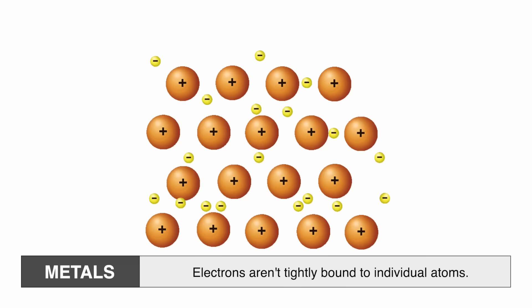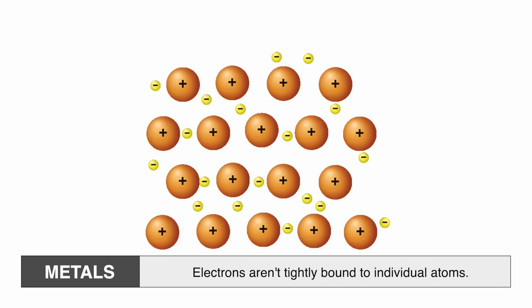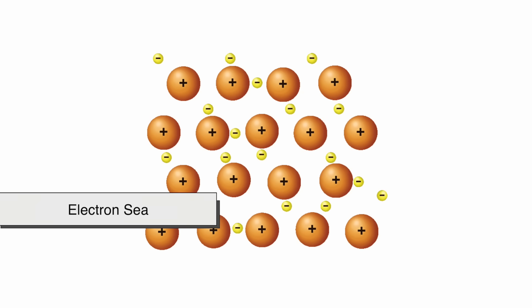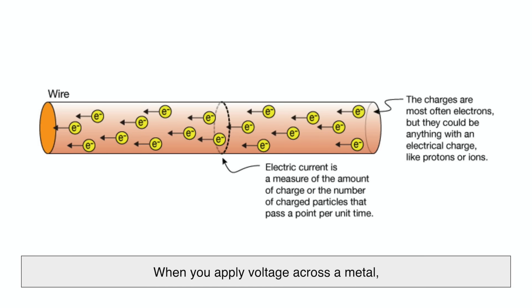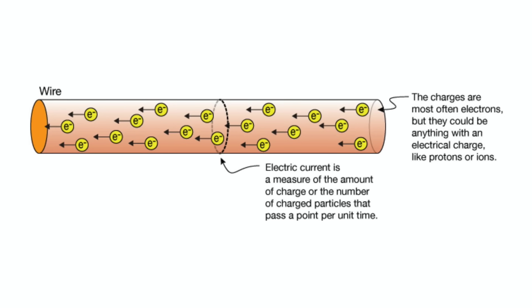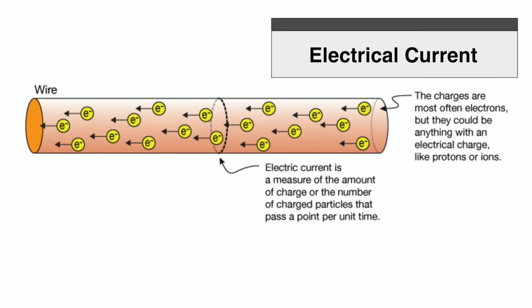In metals, electrons aren't tightly bound to individual atoms. Instead, they're part of what's called an electron sea, free to drift around. When you apply voltage across a metal, these loose electrons start moving in one direction. That movement is what we call electrical current.